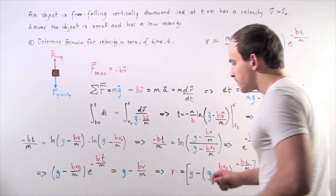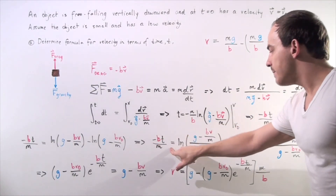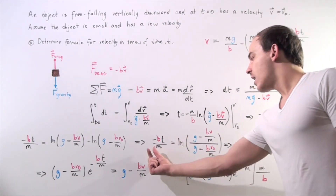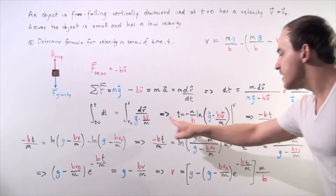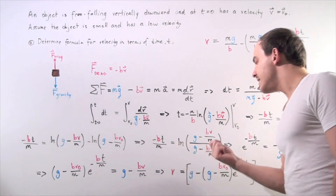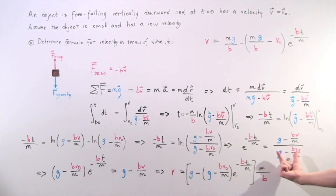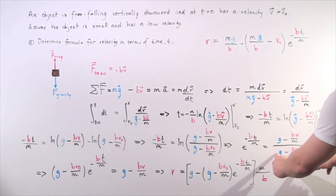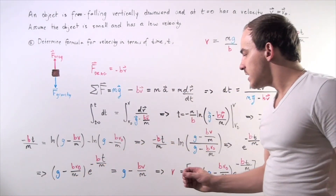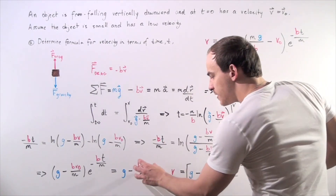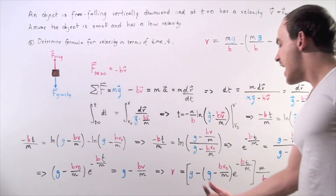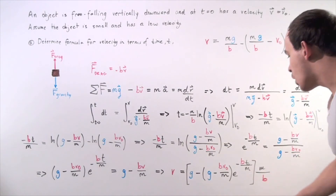Now we take the exponent e of both sides. We get e to the power of minus bt divided by m on the left, and since e of ln simply cancels, we're left with the argument on the right. We then bring terms to the other side and solve for v: we move this term to one side, this term to the other side, and divide by b.